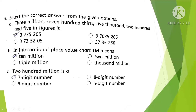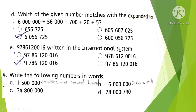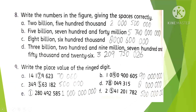Question 3: Select the correct answer from the given options. Three million, seven hundred thirty-five thousand, two hundred and five — the first option is correct. In the international place value chart, PM means 10 million. Two hundred million is a nine-digit number. Which of the given numbers matches with this expanded form — the third option is the correct option.